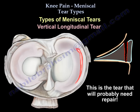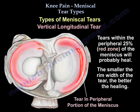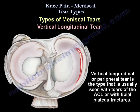Peripheral tear is vascular and probably will need repair. Tears in the peripheral 25% in the red zone will heal. The smaller the rim width of the tear, the better the healing. This longitudinal or peripheral tear is the type that you see with ACL tears and also with tibial plateau fractures.